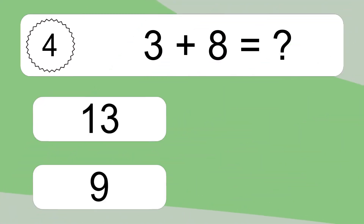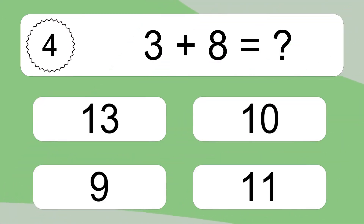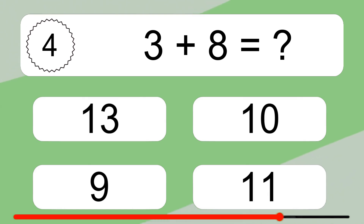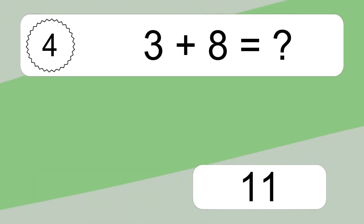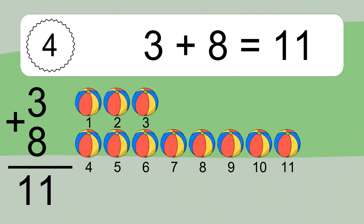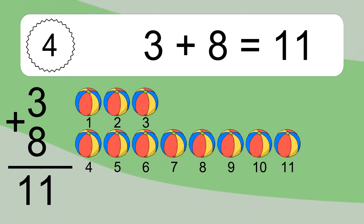3 plus 8 equals what? 3 plus 8 equals 11. Let's count it: 1, 2, 3, 4, 5, 6, 7, 8, 9, 10, 11.